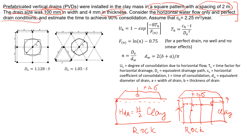We also know that the coefficient of consolidation in the horizontal direction, C_h, will be 2.25 square meters per year. Now we're going to estimate the time to achieve 90% consolidation, and you'll see later that we can also look at any other percentage of consolidation.